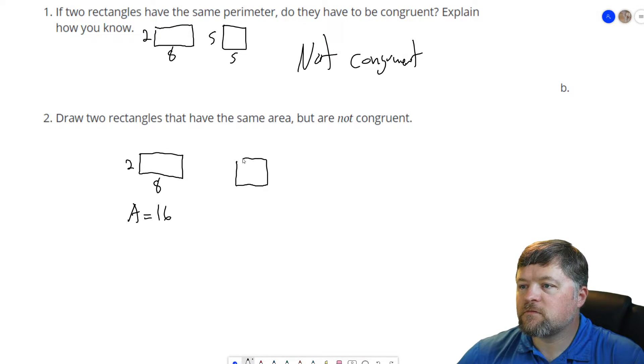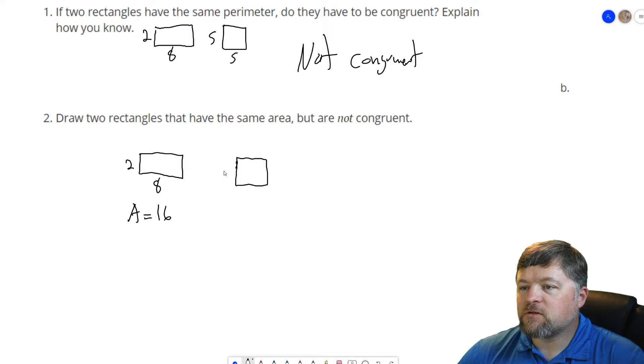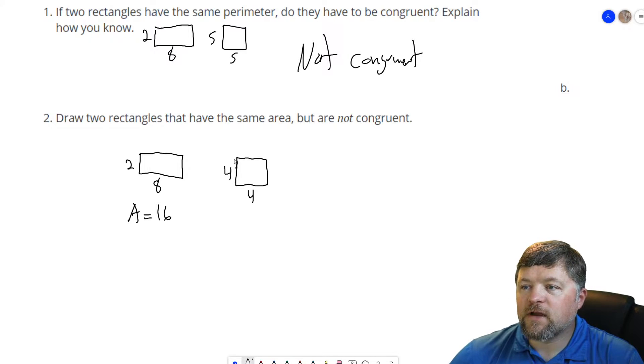Now 16 we could also get by a square that is 4 units on a side. So a rectangle that's 4 units by 4 units would also have an area of 16. So same area, not congruent.